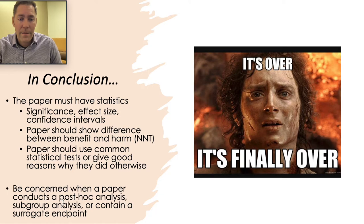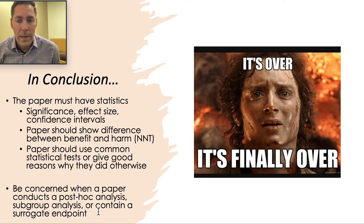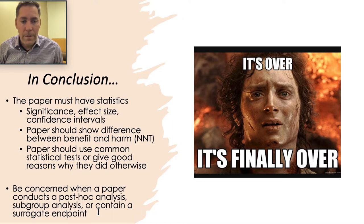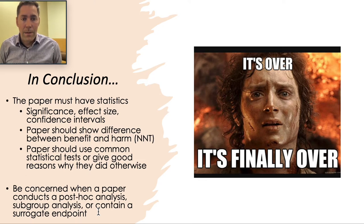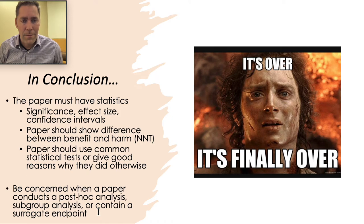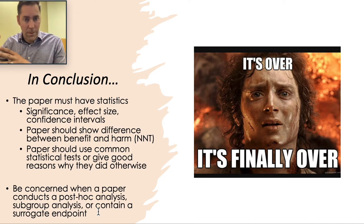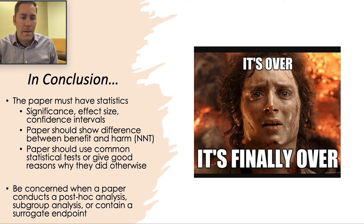Be concerned when a paper conducts a post-hoc analysis, subgroup analysis, or contains a surrogate endpoint. For example, a paper might show how well Prozac works at a surrogate endpoint like three weeks — but that's not how we treat patients; we use Prozac for six months to a year. A subgroup analysis is exemplified by that naltrexone paper where the combined study said naltrexone doesn't work, but then they said 'look, this subgroup works' — that defeats the purpose. Post-hoc analysis is when you take all the data and create a new hypothesis out of it after the fact, instead of starting with a hypothesis and then collecting data.